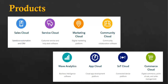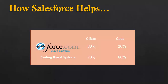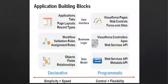Then Commerce Cloud provides digital commerce, point of sales, and other management. These are popular products currently available from Salesforce. The next slide explains how Salesforce helps. Salesforce implementation is divided into two parts: first is clicks and second is code. The Force.com cloud platform focuses on 80% clicks and 20% code, whereas coding-based systems work on 20% clicks and 80% code. Because of less code, this Salesforce cloud platform is more popular, as less code makes it easier to manage and understand.